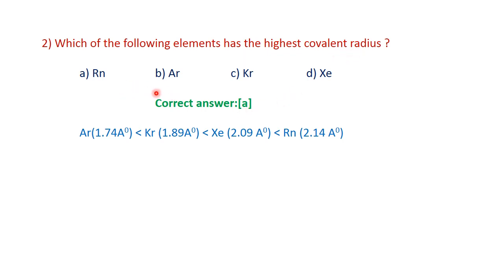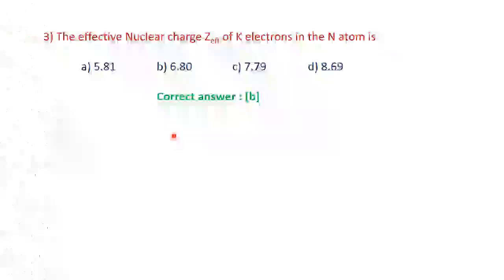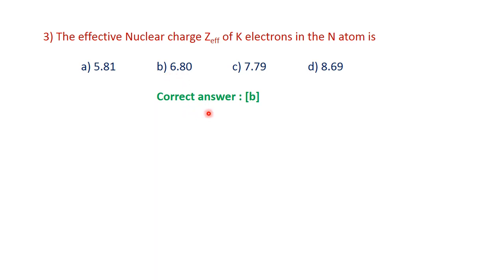The correct answer for Question 2 is Rn, which has the highest covalent radius. Question 3: The effective nuclear charge of a K electron in a nitrogen atom. Nitrogen is 1s2, 2s2, 2p3. The 1s2 is the K shell. The effective nuclear charge Z_eff for the K electron — the correct answer is B.